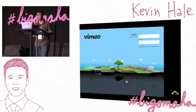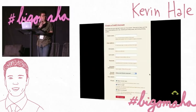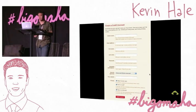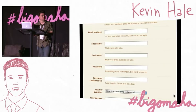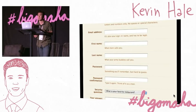This is Vimeo's login page — beautifully done. It lets you know it's going to be a little bit different with their mini lightbox-style login. This is the signup page for a wine social network called Cork. Some of the best copy I've ever seen on a registration form: 'First name — what mom calls you. Last name — what army buddies call you. Password — something you remember but hard to guess. Password confirmation — type it again, think of it as a test.' Just straight-up poetry.